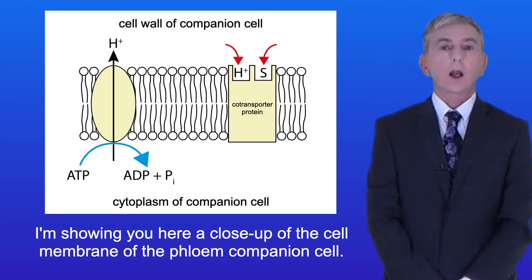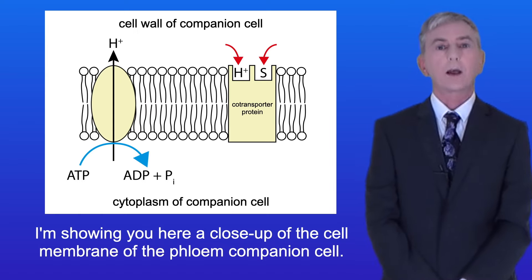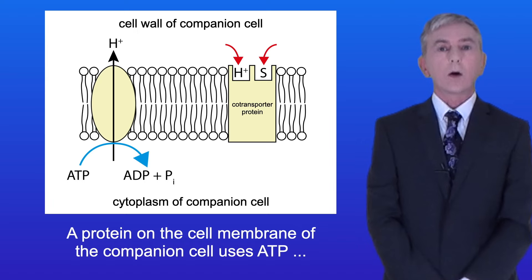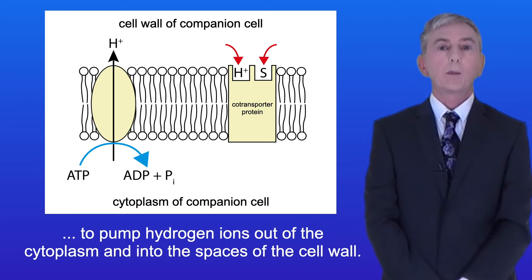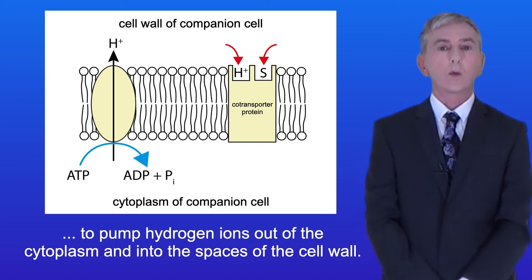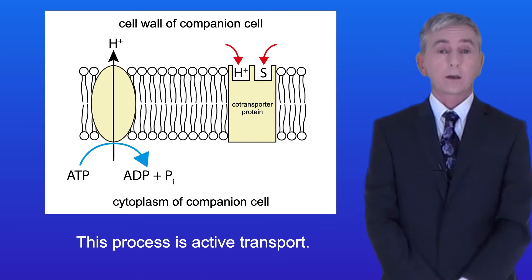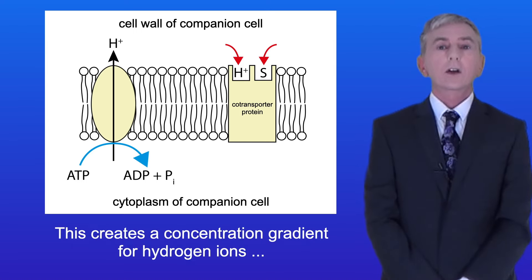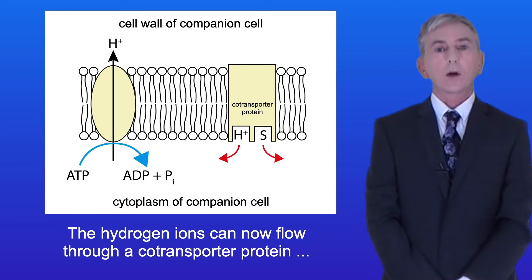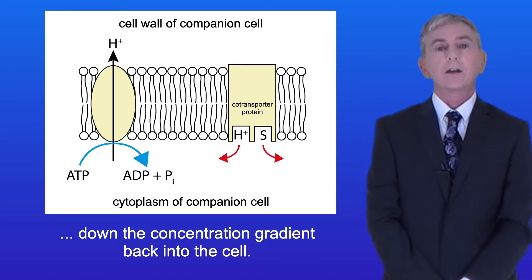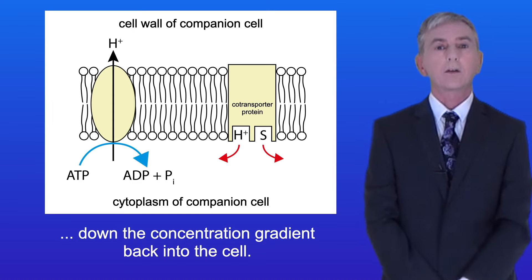Here is a close-up of the cell membrane of the phloem companion cell. A protein on the cell membrane of the companion cell uses ATP to pump hydrogen ions out of the cytoplasm and into the spaces of the cell wall. This process is active transport and creates a concentration gradient for hydrogen ions, with more hydrogen ions on the outside of the cell membrane. The hydrogen ions can now flow through a co-transporter protein down the concentration gradient back into the cell.